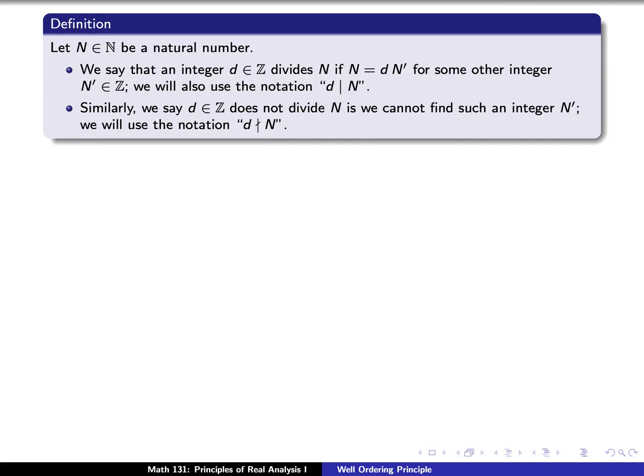Now let's talk about an application of why this is even useful. I want to go over a couple of definitions. Let n be a natural number — remember n here could be 1, 2, 3, and so forth; it's always a positive integer. We'll say that an integer d divides n if n equals d times some other integer n′. Similarly, we'll say that d does not divide n if we cannot find such an integer n′.